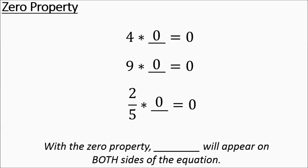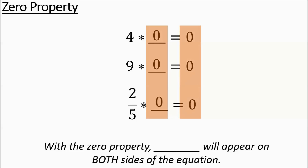With the zero property, 0 will appear on both sides of the equation. There's a 0 to the left of the equal sign and a 0 to the right of the equal sign — zeros are going to be on both sides. So what we're going to do now is go through a couple of examples and see if you can name the properties.